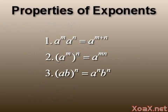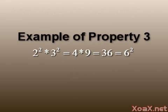For our third property of exponents, we have a times b to the n equals a to the n times b to the n. For example, 2 to the 2 times 3 to the 2 equals 4 times 9 which is 36 which equals 6 to the 2.